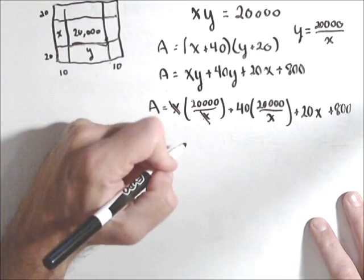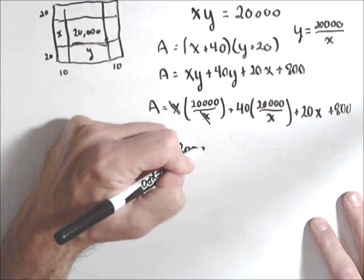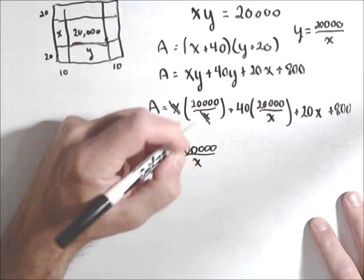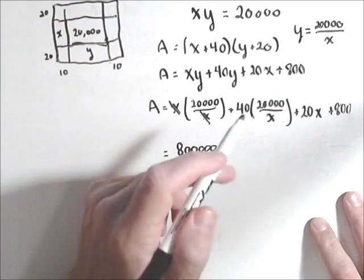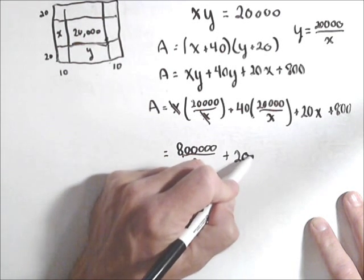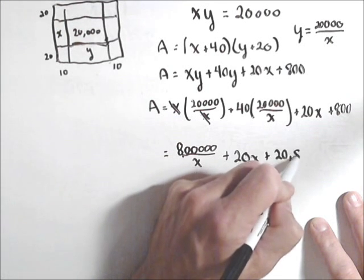So we have 800,000 over x, so that comes from that term. I'm going to add the 20,000 and the 800 together at the end, plus 20x plus 20,800.